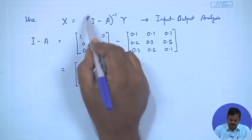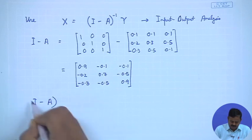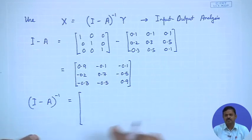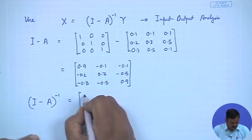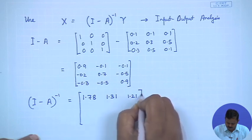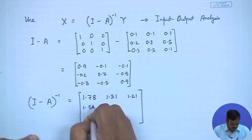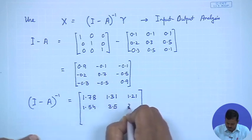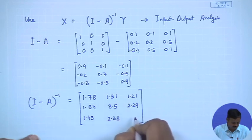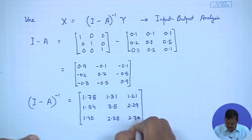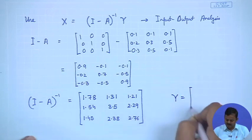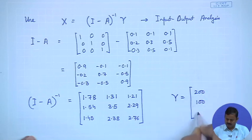Now we have to invert this matrix. There are many tools available online for small matrices. So (I minus A) inverse turns out to be: row 1 — 1.78, 1.31, 1.21; row 2 — 1.54, 3.5, 2.29; row 3 — 1.45, 2.38, 2.79. This is the (I minus A) inverse, and we also know that y is 200, 100, 100.